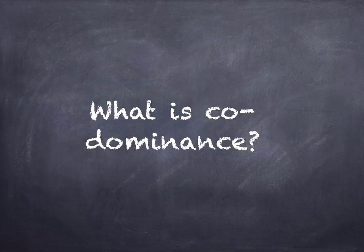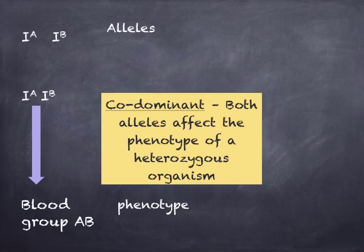What is codominance? When you've got two alleles which both contribute to the phenotype, this is called codominance. The phenotype will be a blend of both features, or both features are represented. For example, the alleles that code for antigens A and B are codominant, and thus both alleles will affect the phenotype, so the resulting blood group will be AB.